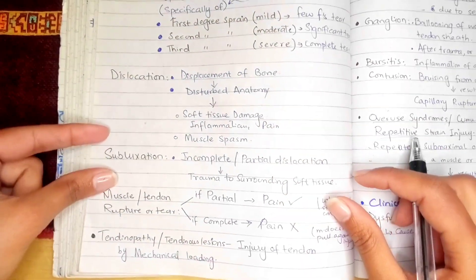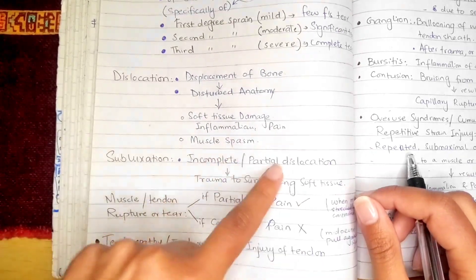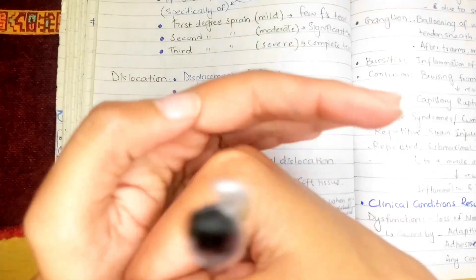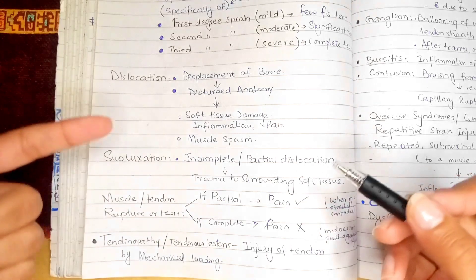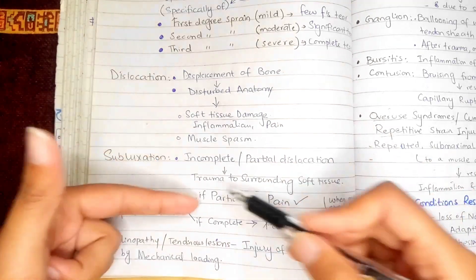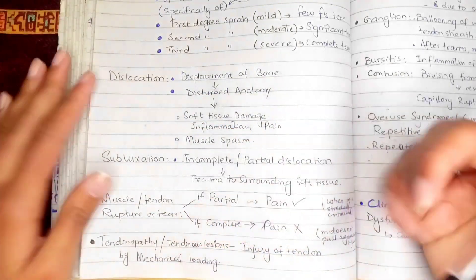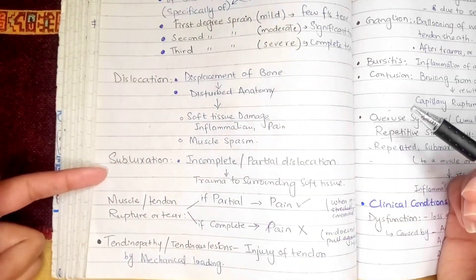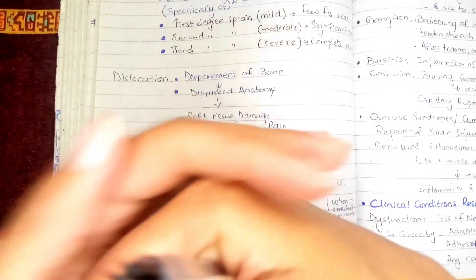Subluxation is basically an incomplete or partial dislocation. The bone is still partially in contact with the joint capsule, and this partial dislocation causes trauma to the surrounding soft tissue. In dislocation there is complete displacement of the bone from the joint capsule, while in subluxation there is partial or incomplete dislocation.